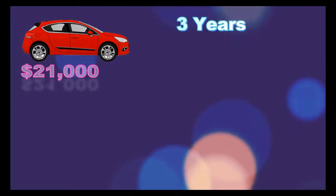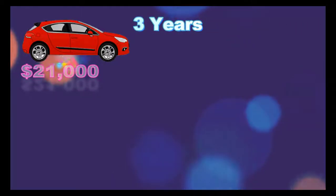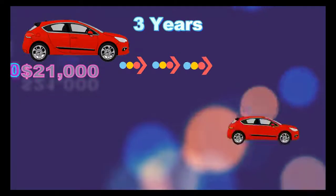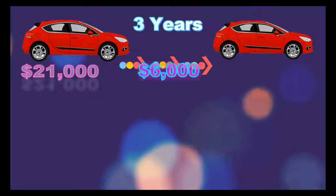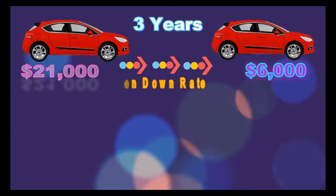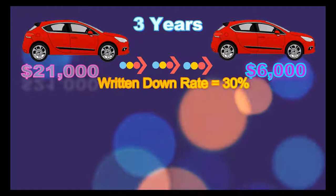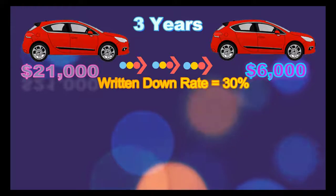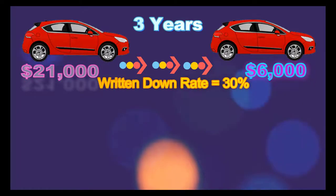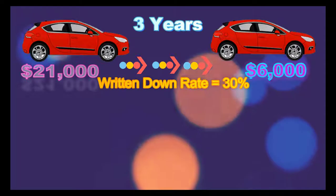Mr. Ben purchased a Toyota Corolla 2008 model for $21,000, which he intends to use for escorting customers for the next three years. Ben has estimated that after the useful life of three years, his car will be sold for $6,000. What would be the depreciation per year under the straight line method and 30% on the reducing balance method?